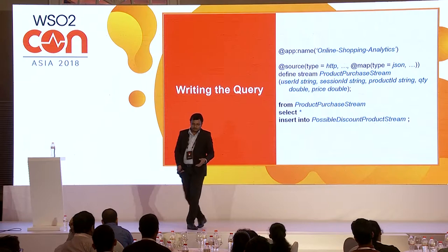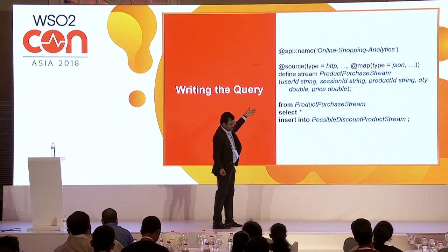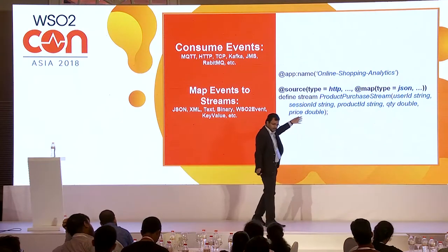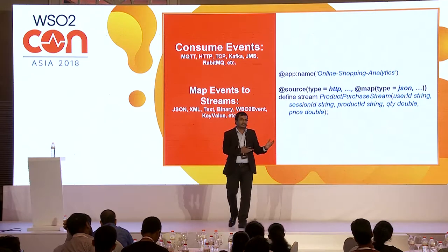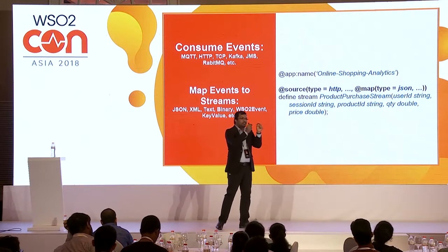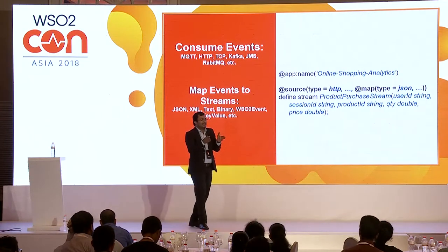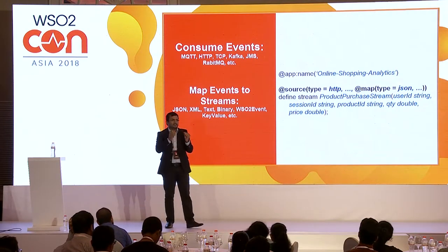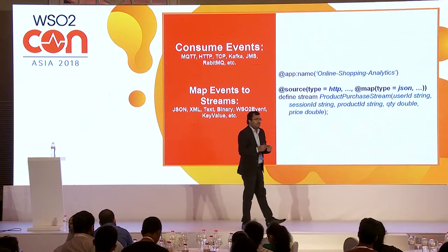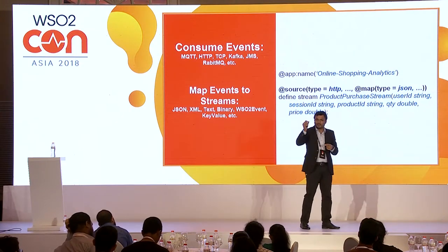There are two types of mappings when converting received events into streams: default mapping and custom mapping. With default mapping, you use a predefined structure. With custom mapping, you use JSON path or XPath to specify which values from the request map to which stream attributes.